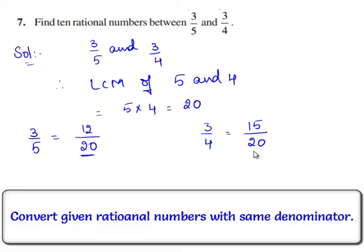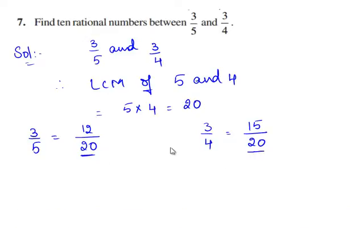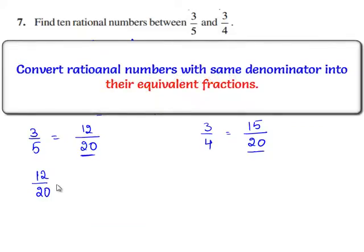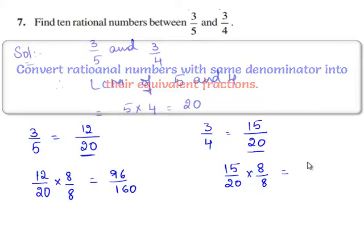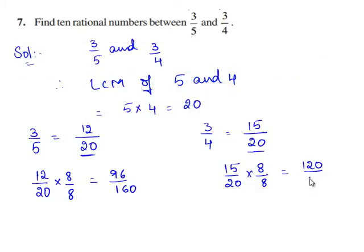Now, let us find the equivalent rational numbers for 12 by 20 and 15 by 20. Let us multiply 12 by 20 with 8 on both numerator and denominator. So, we have 12 times 8 is 96 and 20 times 8 is 160. And also, 15 by 20 is multiplied with 8 on both the numerator and denominator. Therefore, 15 times 8 is 120 and 20 times 8 is 160. Now, let us write 10 rational numbers between 96 by 160 and 120 by 160.